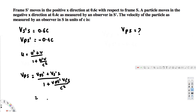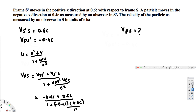Now let's calculate: vp_s' is negative 0.4c, plus v_s'_s which is 0.6c, divided by 1 plus negative 0.4c times 0.6c over c squared. The c squared in the denominator cancels with c times c from the numerator product. The numerator gives 0.2c, and calculating the full expression gives vps equals 0.263c. That's the answer.